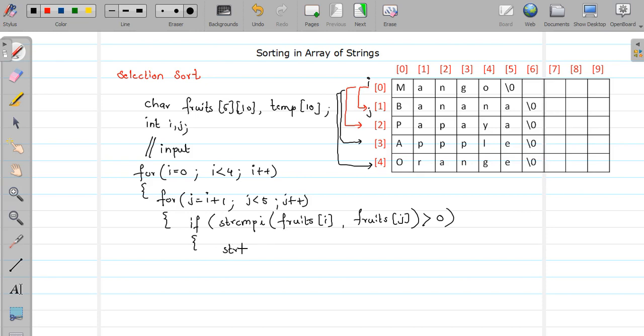So strcpy, what it does is it copies one string or it assigns one string to another. So what we will do is we will first of all copy the string at i-th position of our array into temporary. Now look at this: here I just wrote temp, whereas here I wrote fruits of i, because temp is just a single string, whereas fruits is an array of strings.